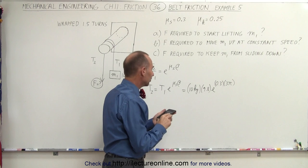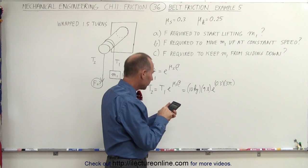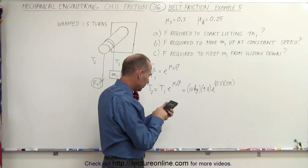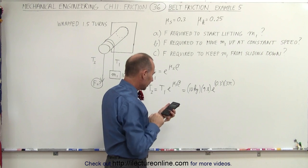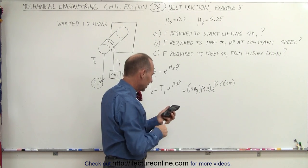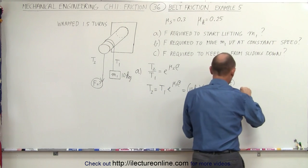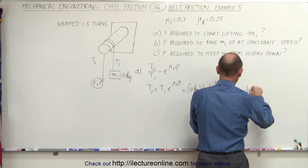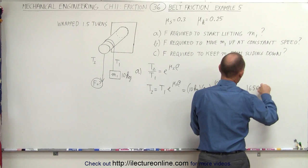Let's see what the force is in this case. 0.3 times 3 times pi, make that the exponent of e times 98. And that will require a force of 1,656 newtons.